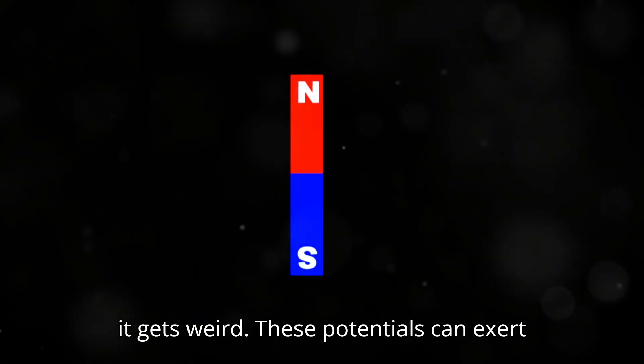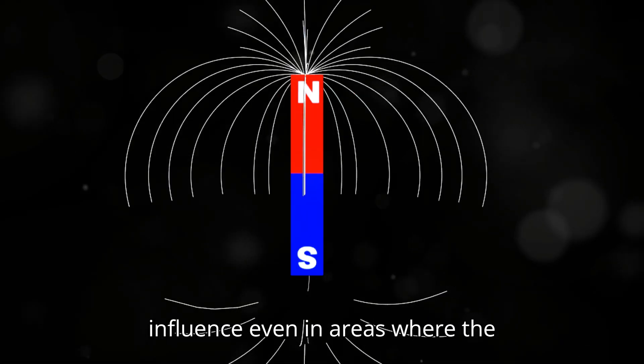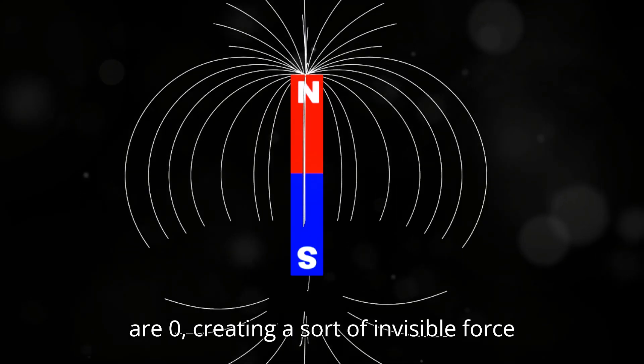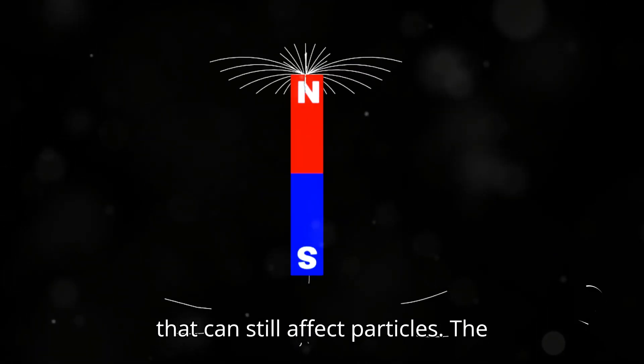Now here's where it gets weird. These potentials can exert influence even in areas where the electric and magnetic fields themselves are zero, creating a sort of invisible force that can still affect particles.